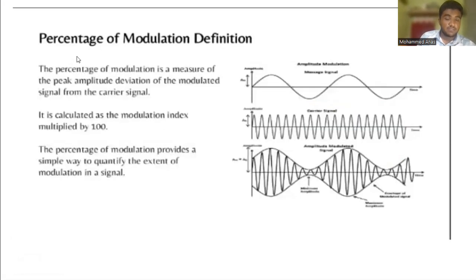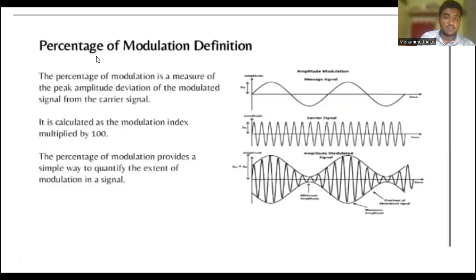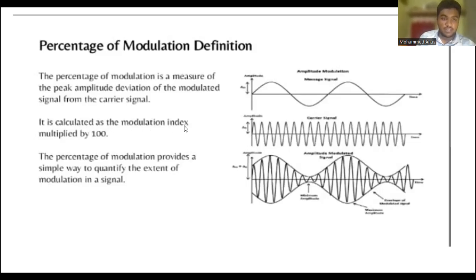The percentage of modulation: the percentage of modulation is a measure of the peak amplitude deviation of the modulated signal from the carrier signal. It is calculated as the modulation index multiplied by 100. The percentage of modulation provides a simple way to quantify the extent of modulation in a signal.